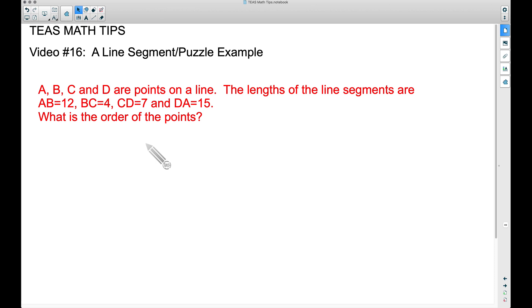So we have A, B, C, and D are points on a line. The lengths of the line segments are AB is 12, BC is 4, CD is 7, and DA is 15. What's the correct order of the points?